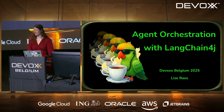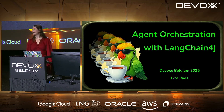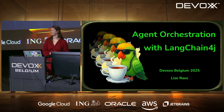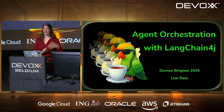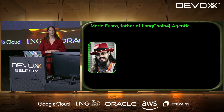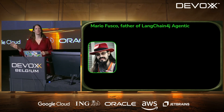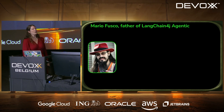Thank you so much Stefan for the opportunity and everything that happened after. It's great to see the Java ecosystem ramping up for AI. Here I am presenting another agent orchestration framework with LangChain4j. Most of the agentic code was written by Mario Fusco — thank you very much.